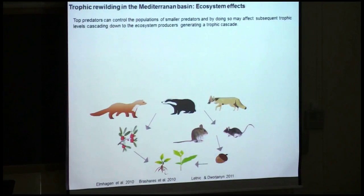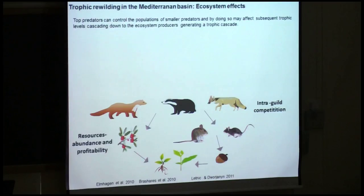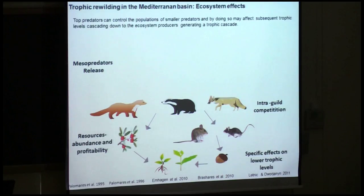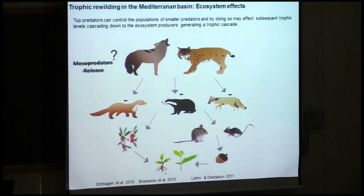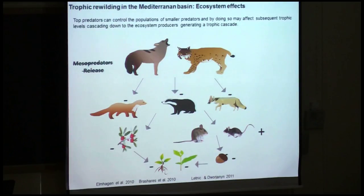This is a simplified food web of a Mediterranean ecosystem in which meso-carnivores are at the top level, with populations controlled by intra-guild competition, resource abundance, and profitability — leading to specific effects on lower trophic levels. This may be a context of mesopredator release. When predators return and exert negative control on meso-carnivore abundance, this removes the mesopredator release effect and may generate a change in the sign or strength of interactions established under that previous scenario.